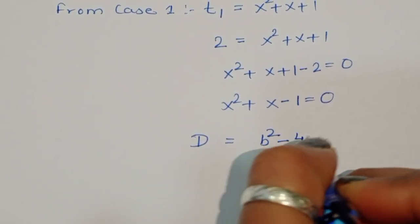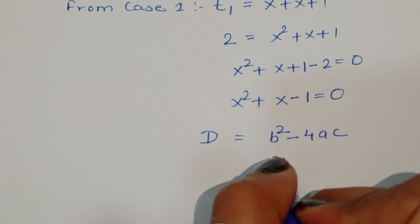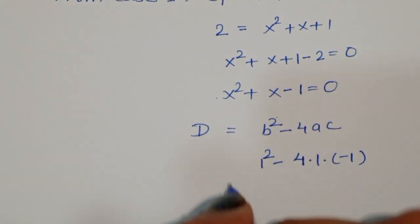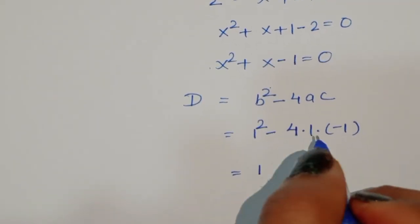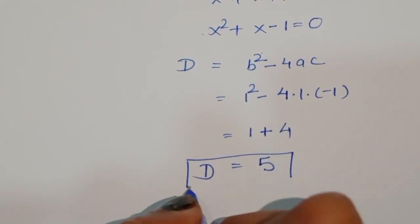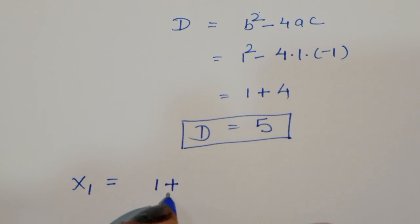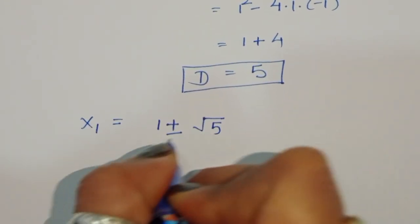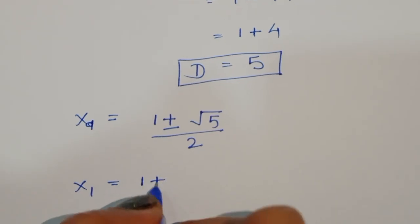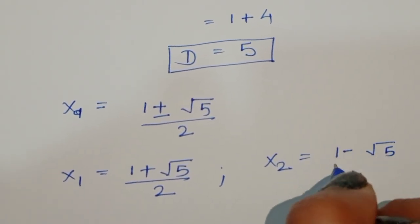So d equals 1 squared minus 4 times 1 times minus 1. The minus times minus gives plus, so d equals 1 plus 4 equals 5. Therefore x equals 1 plus or minus square root of 5, divided by 2.